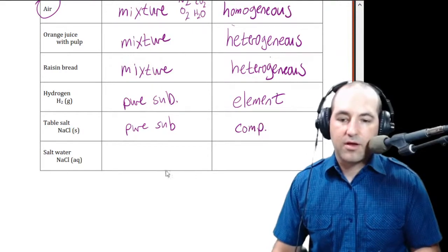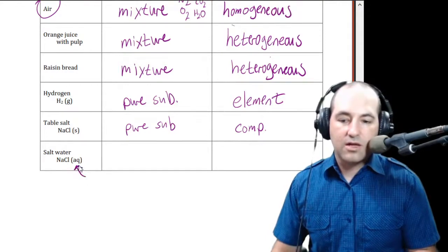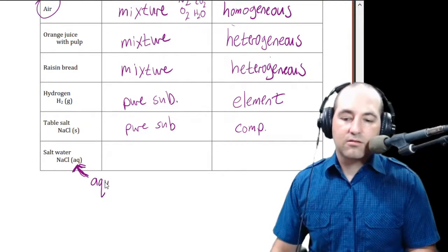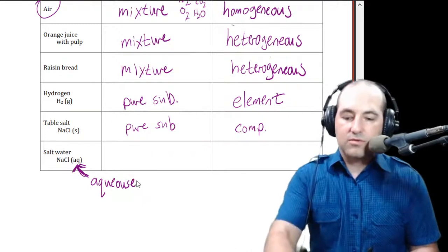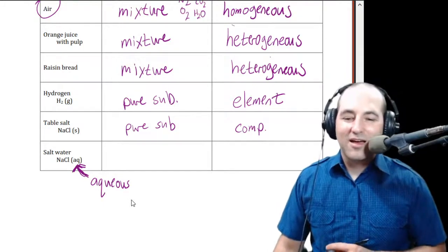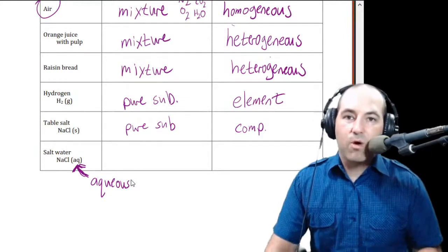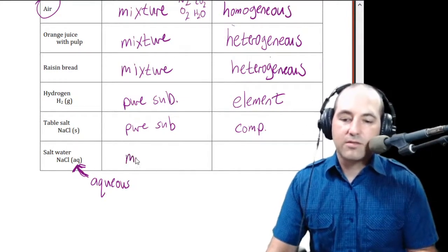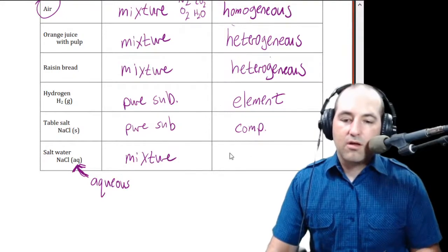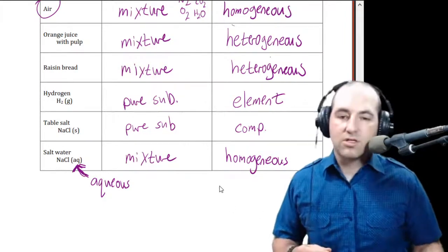Salt water has actually the same formula, but there's a tricky bit here. The notation "aq" — which we defined as aqueous, meaning dissolved in water — tells us that in this case we do have a mixture because we have sodium chloride and then we have water. So that is a mixture, and in this case we would probably describe it as homogeneous because the salt would be dissolved and distributed throughout.